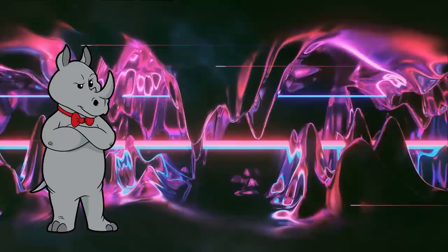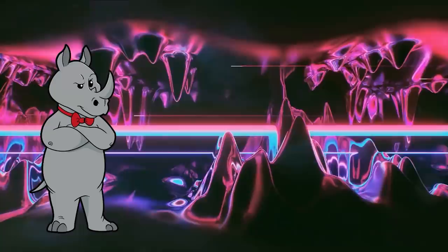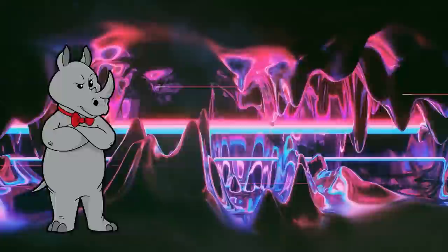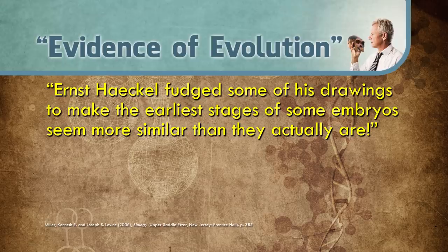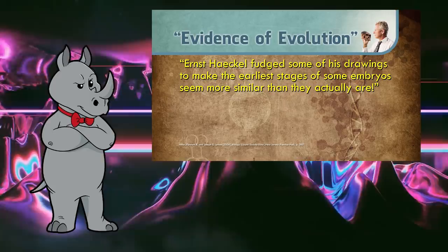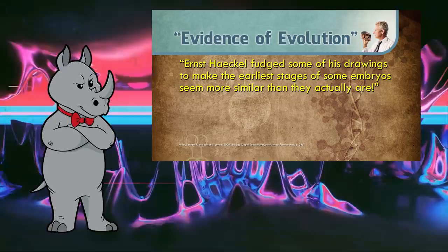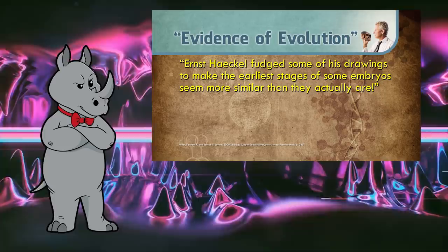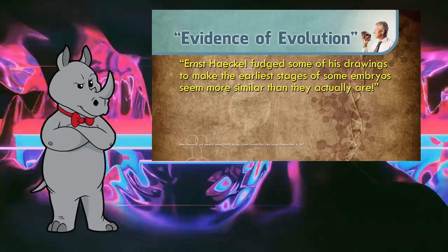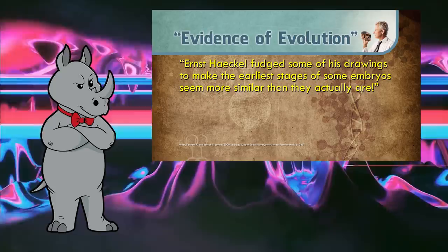Haeckel perpetuated a hoax — even many evolution-friendly biology textbooks admit as much today. But you really need to make up your mind: do we still teach Haeckel's recapitulation theory, or do the textbooks admit it's not viable? You cannot have it both ways — those are literally opposite statements. This textbook explicitly states that Haeckel fudged his drawings to make them appear more similar than they actually were — something that may not have been intentional, but a product of the more limited technology of his day. But because that sentence happens to be in the Evidence for Evolution section, that textbook actually teaches recapitulation theory?